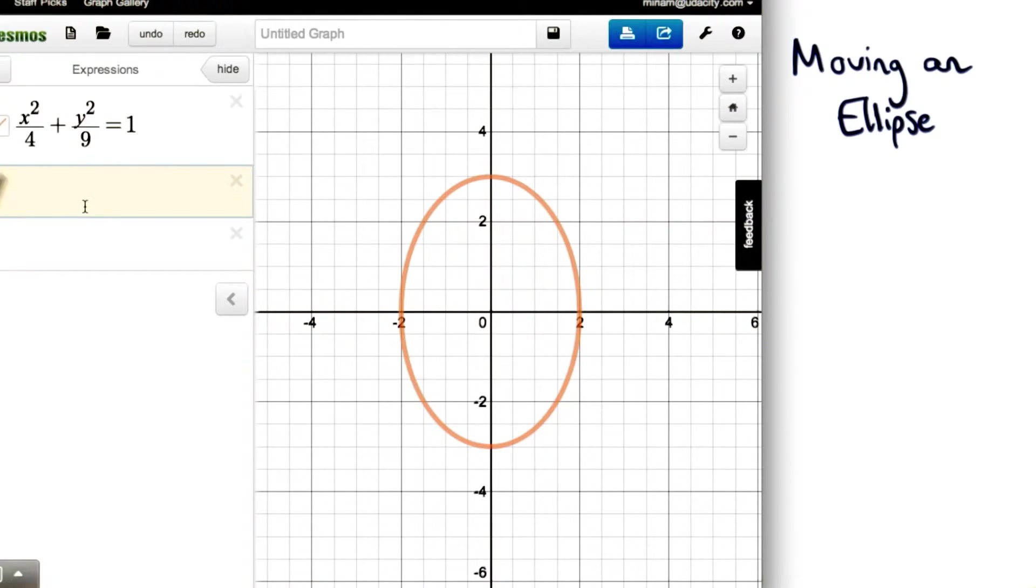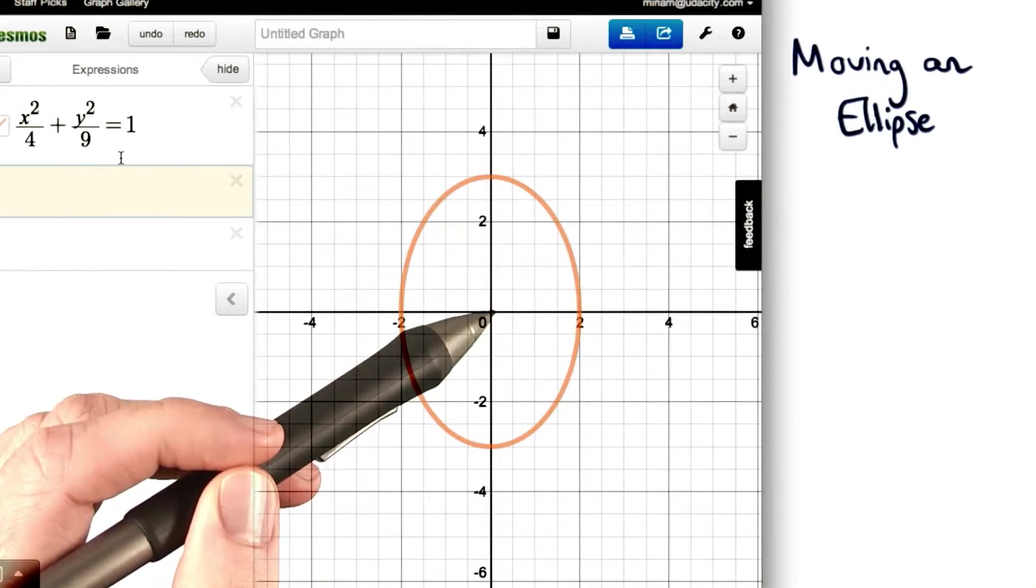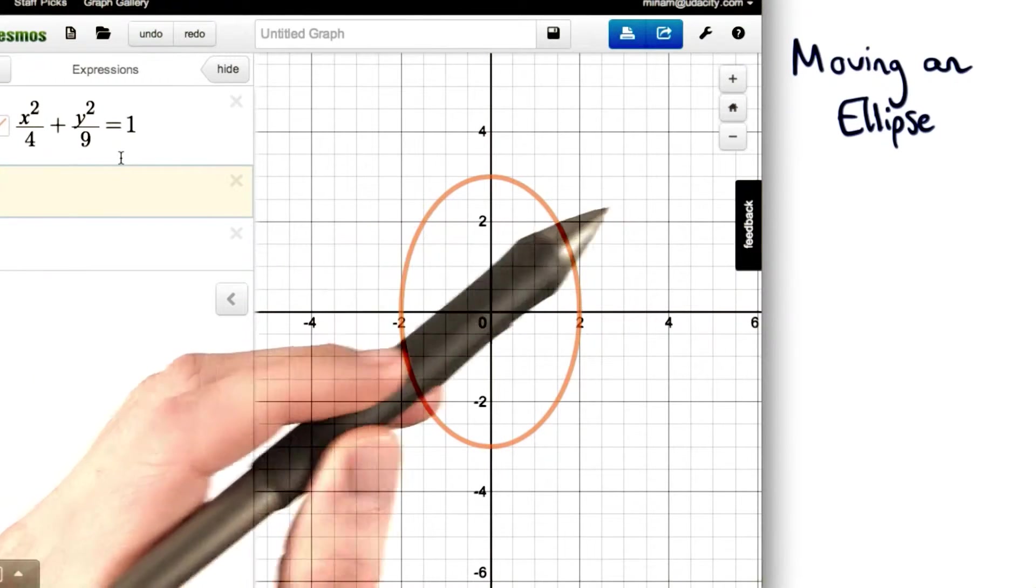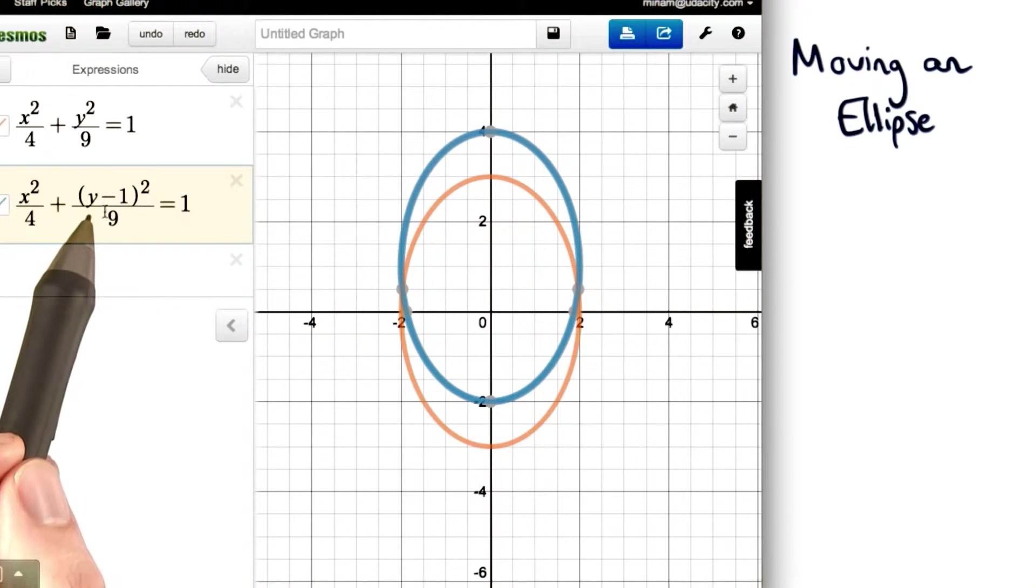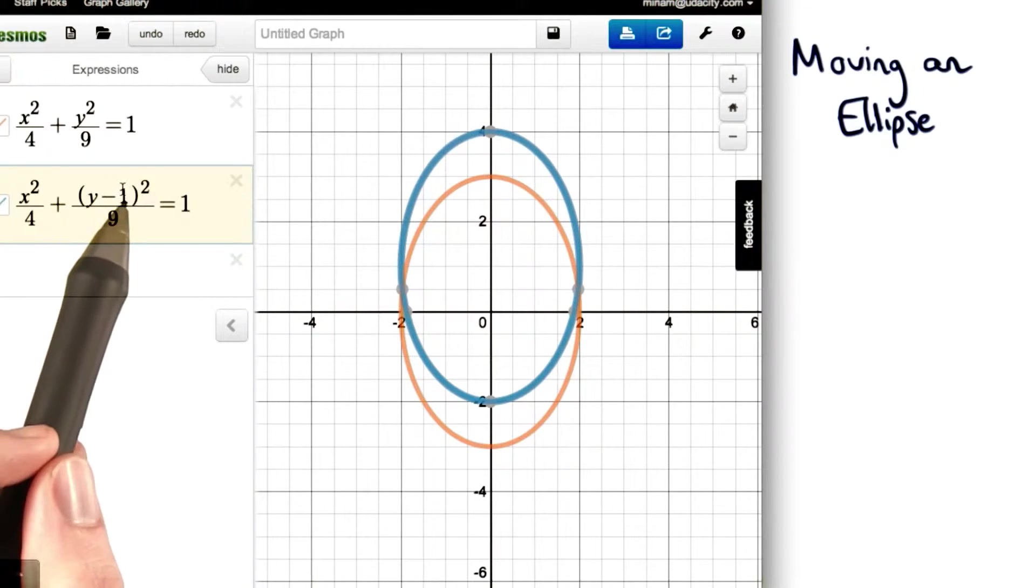But not every ellipse is going to be centered at the origin. Sometimes they can be elsewhere. Just like we could shift circles, we can also shift ellipses. So if I wanted to graph this one, I would notice that the graph would shift up one whole unit. Remember when we replace y with (y minus a number), the graph really shifts up that many units.